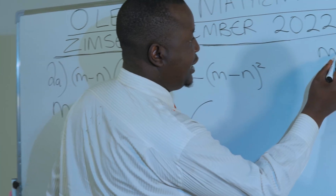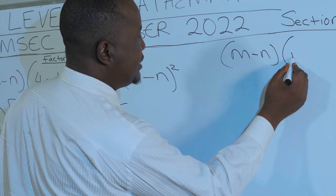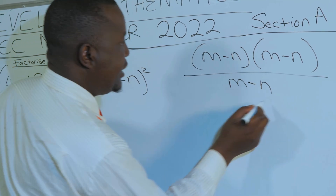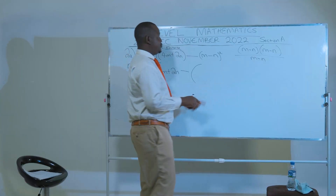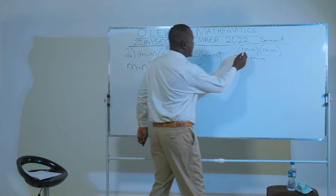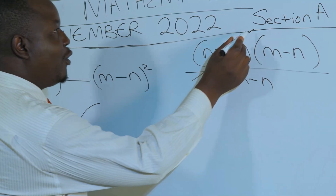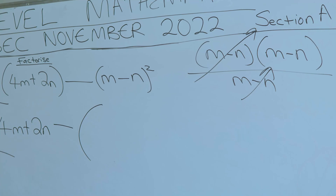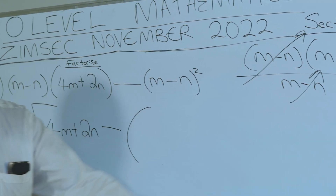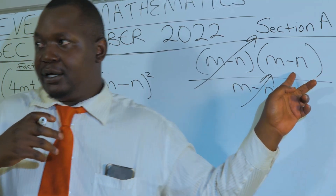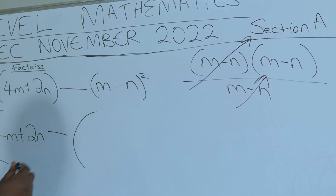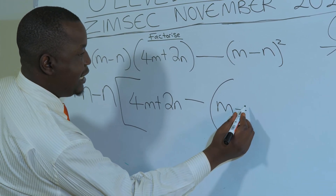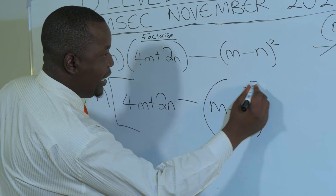Then M minus N getting into M minus N squared — it's a situation like this. M minus N squared is M minus N times M minus N, and then M minus N is getting into that. So they are going to cancel out, and then we are left with M minus N that side. So this is minus M minus N. We close the brackets.